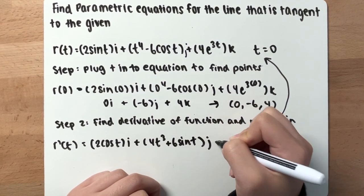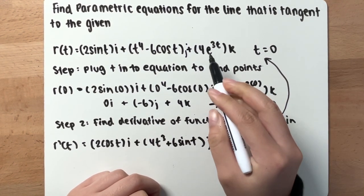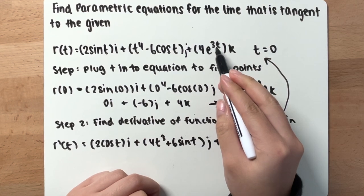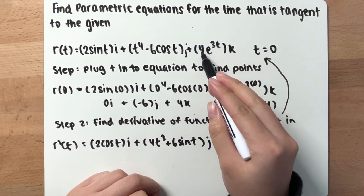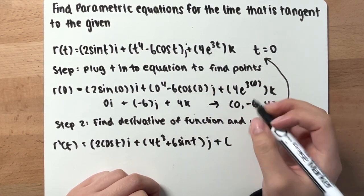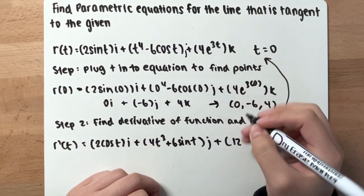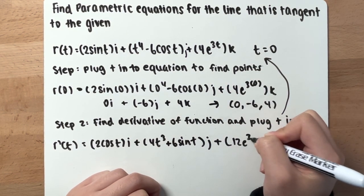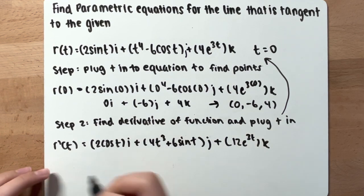Okay, j plus derivative of 4e^(3t), multiply this and this, so you have 12e but then you keep 3t, so 12e^(3t), k.